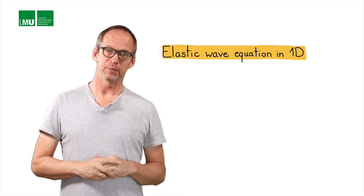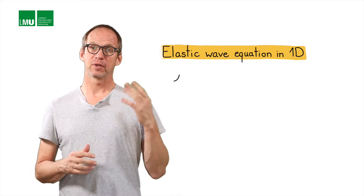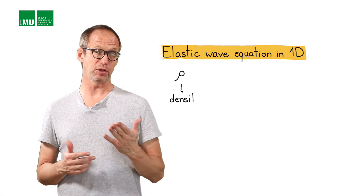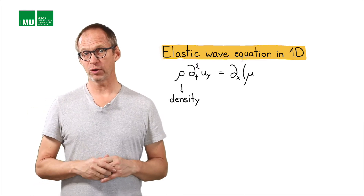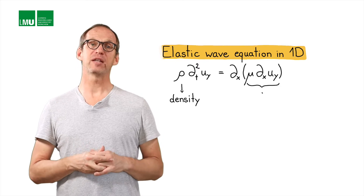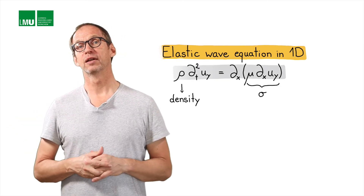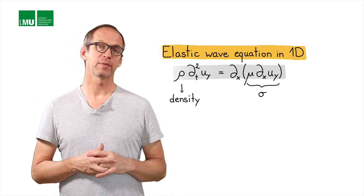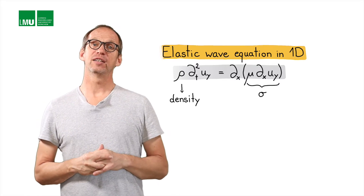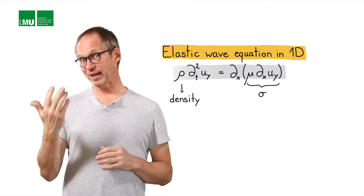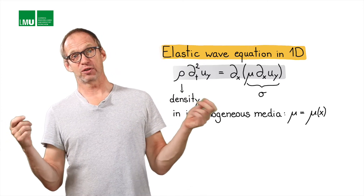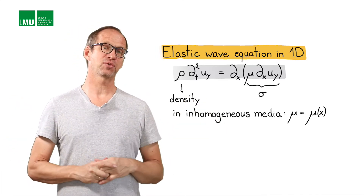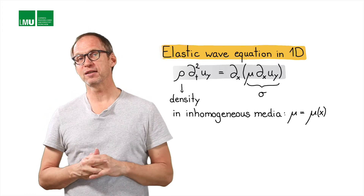Let's use that concept of stress and develop the elastic wave equation in one dimension. The wave equation has on the left-hand side the density multiplying the second time derivative of the displacement u, which equates the divergence of the stress. The stress, as we've seen before, is simply the shear modulus times the space derivative of the displacement, which is called the strain. Now, if we look at the entire equation, we know that the shear modulus might actually depend on x. If you think of the string that I just showed you, maybe that's not so realistic because we assume the shear modulus of the string is the same — it's homogeneous. Maybe not if it's a very old string. But let's for the moment assume that it's homogeneous.